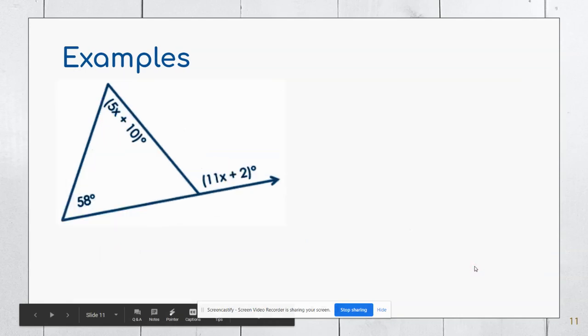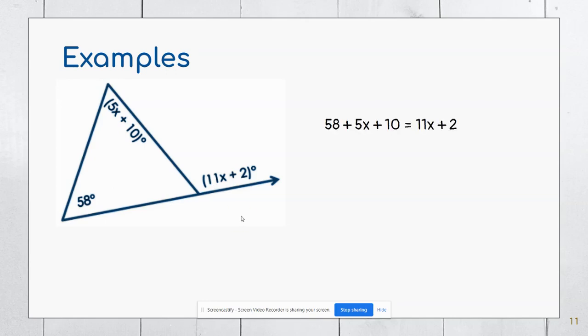I have one more example. I see that my exterior angle is labeled. My two opposite interior angles are also labeled. So I'm going to add those two interior angles together and set it equal to the exterior angle. I'm going to combine the constants together on the left. Again, there's more X's on the right hand side of the equation. So I'm going to keep X positive, and I'm going to subtract 5 instead of subtracting 11. And then I'm going to subtract 2, and then divide by 6, giving me that X is 11.